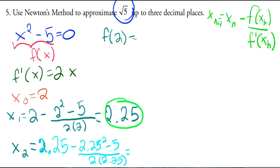2 times 2.25. So then I get 2.236111111. Okay, so then the next one—